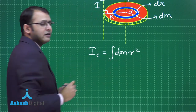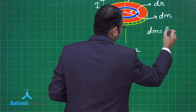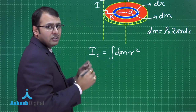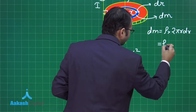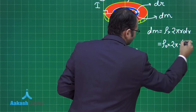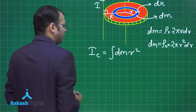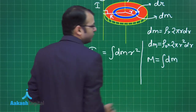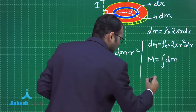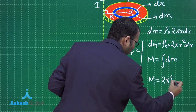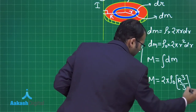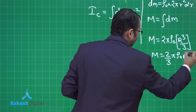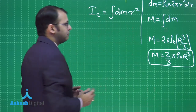For variable mass distribution, dI = dm·r². The mass element dm = ρ·2πr·dr = ρ₀r·2πr·dr = 2πρ₀r²dr. To find total mass M, integrate dm from 0 to R: M = 2πρ₀ ∫r²dr = 2πρ₀·R³/3, giving M = (2/3)πρ₀R³. This is an important expression to be used later for comparison.